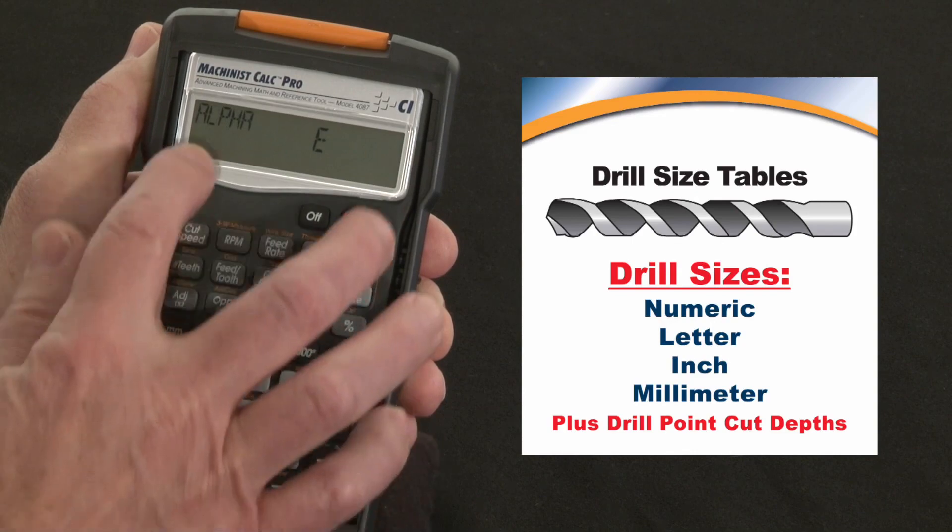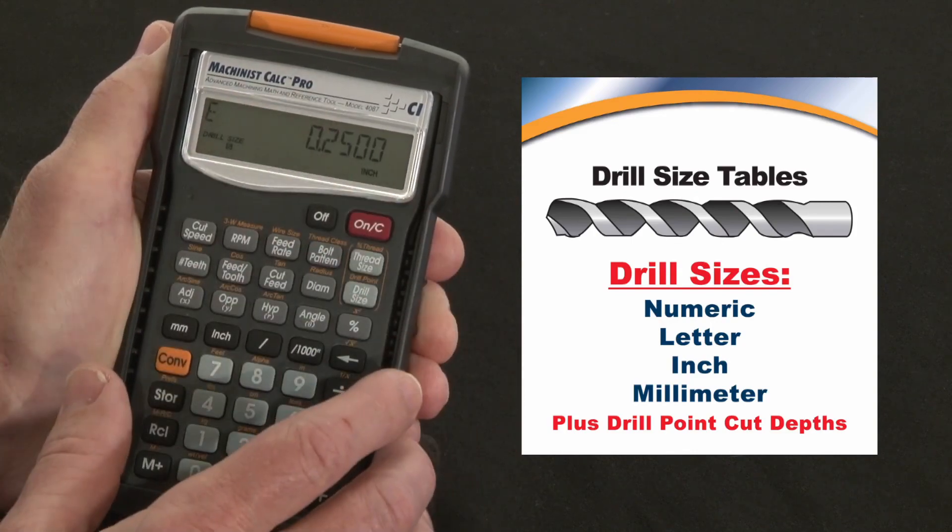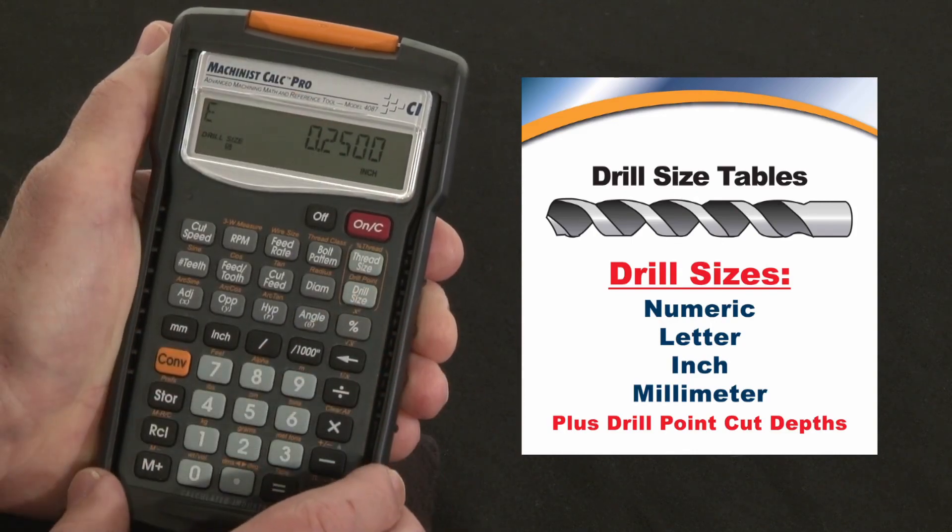So I'm going to go 5, convert alpha, it says alpha E, that's my drill size. And I just broke that, so what can I use right below that that won't over drill the hole?